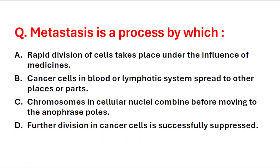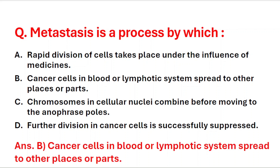Next question: metastasis is a process by which — A: rapid division of cells takes place under the influence of medicine, B: cancer cells in the blood or lymphatic system spread to other places or parts. The right answer is option B.